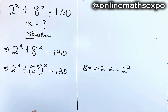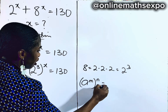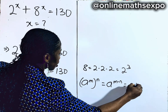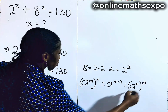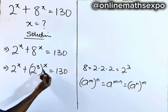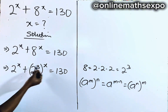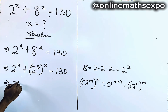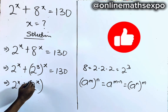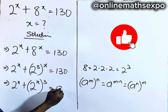Remember that for every base raised to power n, then raised to power m, it equals the base to the power of n times m. The powers can be switched. So we are going to have 2 to the power of x plus 2 to the power of x, raised to the power of 3, both equal to 130.